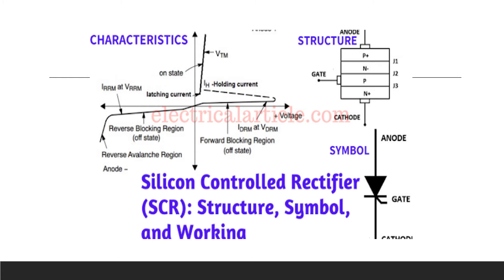Here you can see the structure, characteristics, and symbol of the silicon controlled rectifier, along with its working. It is similar to the PNPN diode with three junctions: J1 near the anode, J3 near the cathode, and J2 in the center, along with a gate terminal applied near the cathode. The device consists of two transistors: PNP and NPN.